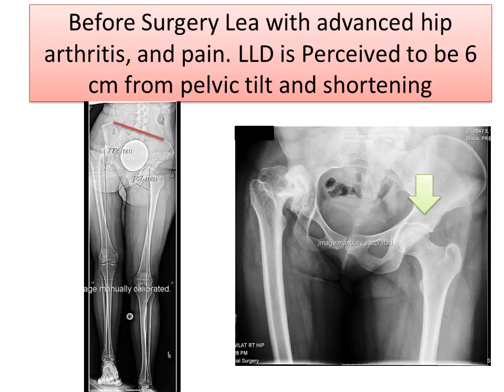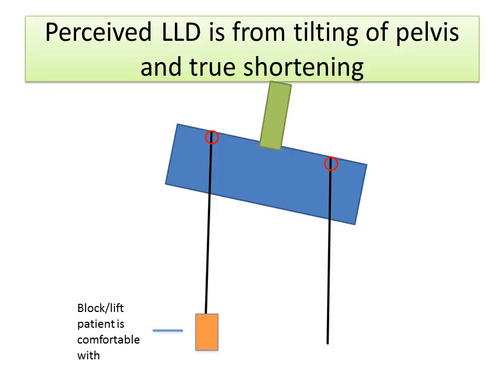Notice the left hip is normal with an acetabulum ball and socket, and you see the difference between that and the right hip, which has a collapsed head and an associated adduction contracture. This schematic diagram helps illustrate the shortening coming from both the actual shortening of the leg, but also in large part due to the tilt of the pelvis.